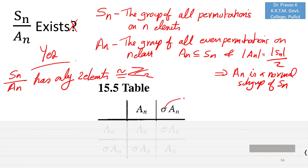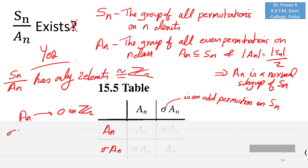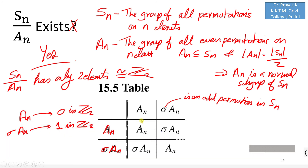Let us draw the group table of Sn over An. If Sigma is an odd permutation, then Sigma An contains all odd permutations. There are only two cosets: An corresponds to 0 in Z2 and Sigma An corresponds to 1 in Z2. This factor group reflects the multiplicative properties of all permutations in Sn. We will continue our study on computations of factor groups of the form G over N in the next video, in particular when G is a direct product.